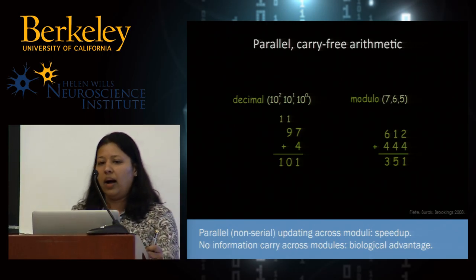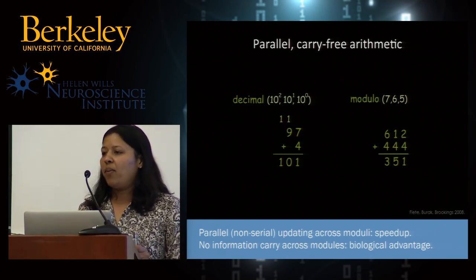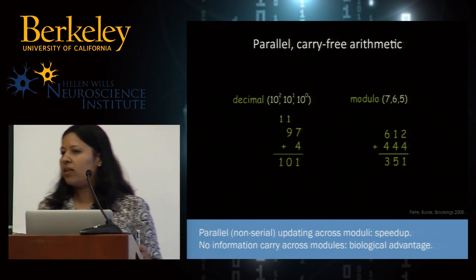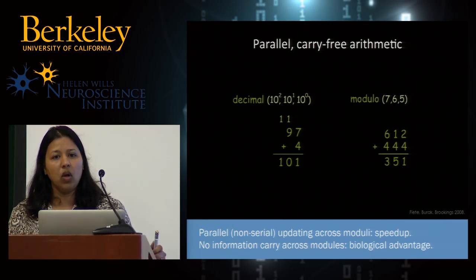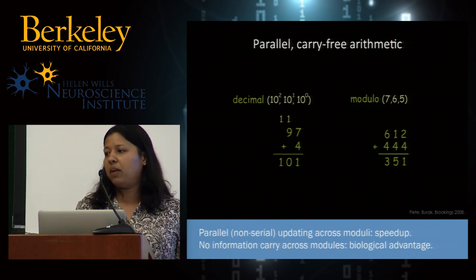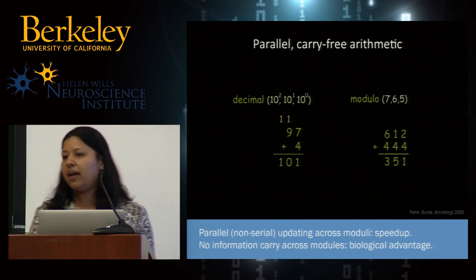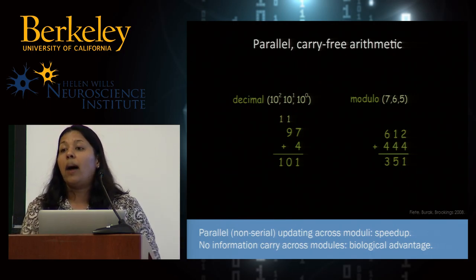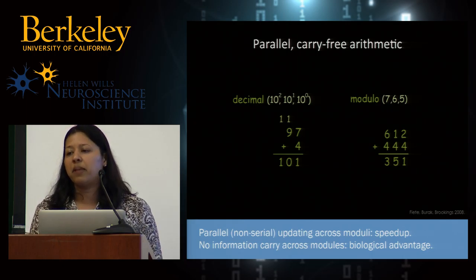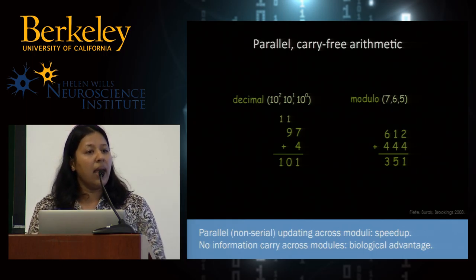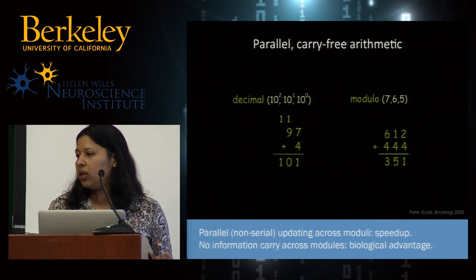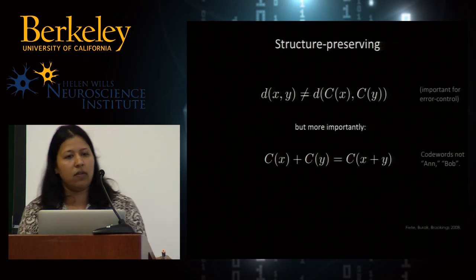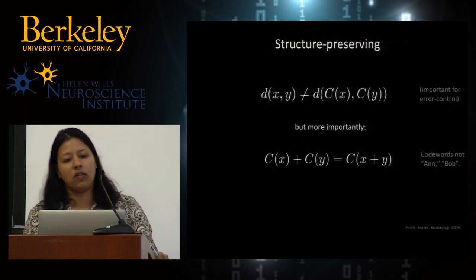Arithmetic is important in this grid cell representation because the system is representing position. To represent an updated position as the animal moves by some displacement delta x, you need to update the position estimate by adding the displacement to the representation. So the system is constantly doing these addition operations, and the parallel nature of modulo arithmetic is a key advantage.